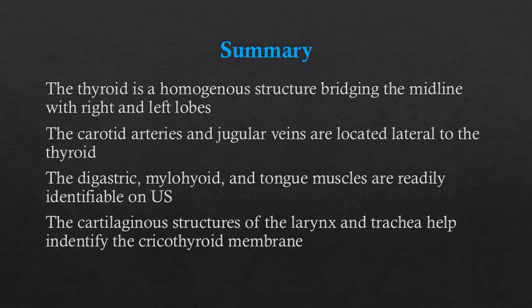In summary, the thyroid is a homogenous solid organ which can be easily characterized with ultrasound. It bridges the midline of the neck with right and left lobes. Lateral to the thyroid we can see the carotid arteries, and lateral to the carotid arteries are the jugular veins. When you evaluate the submental region with ultrasound you can see the digastric muscles, the myelohyoid muscle, and the intrinsic tongue muscles — and this is a place where you may find adenopathy or abscesses. With ultrasound we can evaluate the larynx and trachea and resolve the cartilaginous structures, including the thyroid cartilage, cricoid cartilage, cricothyroid membrane, and the rings of the trachea.